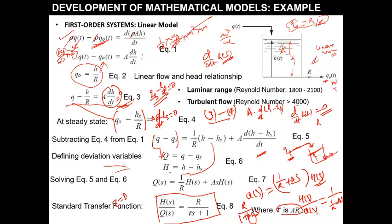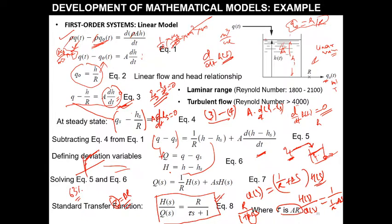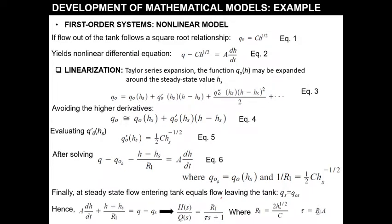Here τ is the time constant of the tank. The time constant is the time taken to reach 63 percent of the total response. This model is a first-order system — a single time constant, single first order. Now we move to the nonlinear case.